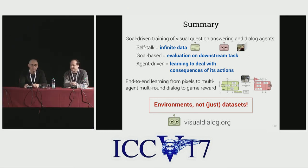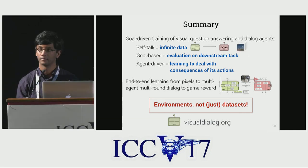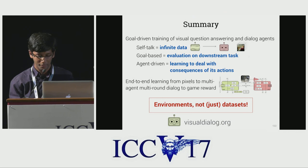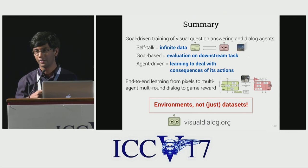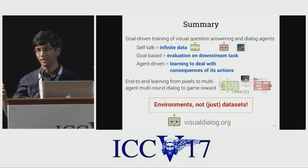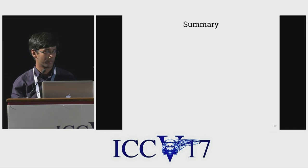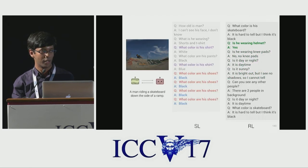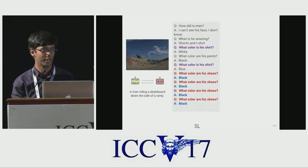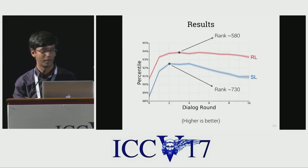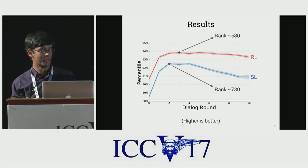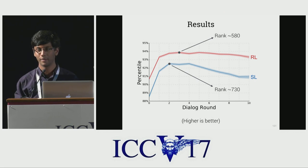Another question: Why does the error rate get worse over time as dialogue gets longer? The caption is a big source of information, so as agents move away from the caption, the supervised pre-trained agents get a lot worse. The RL fine-tuned agents, even though they don't continuously improve, maintain performance at that level — they improve at rounds two to three and then hold steady, rather than degrading as badly as the supervised pre-trained agents.